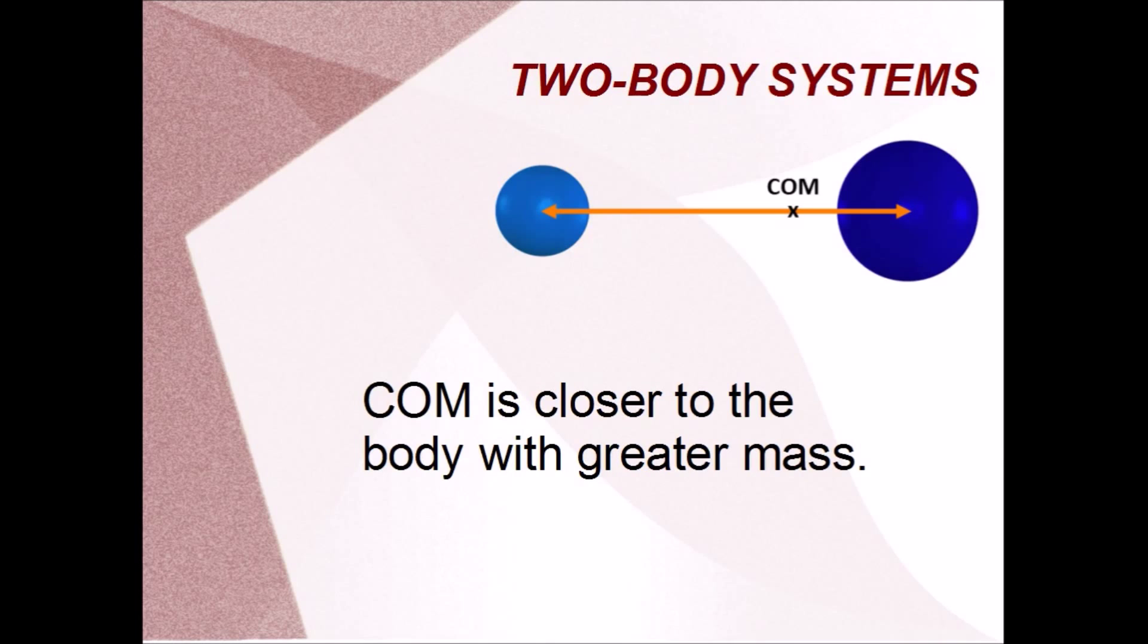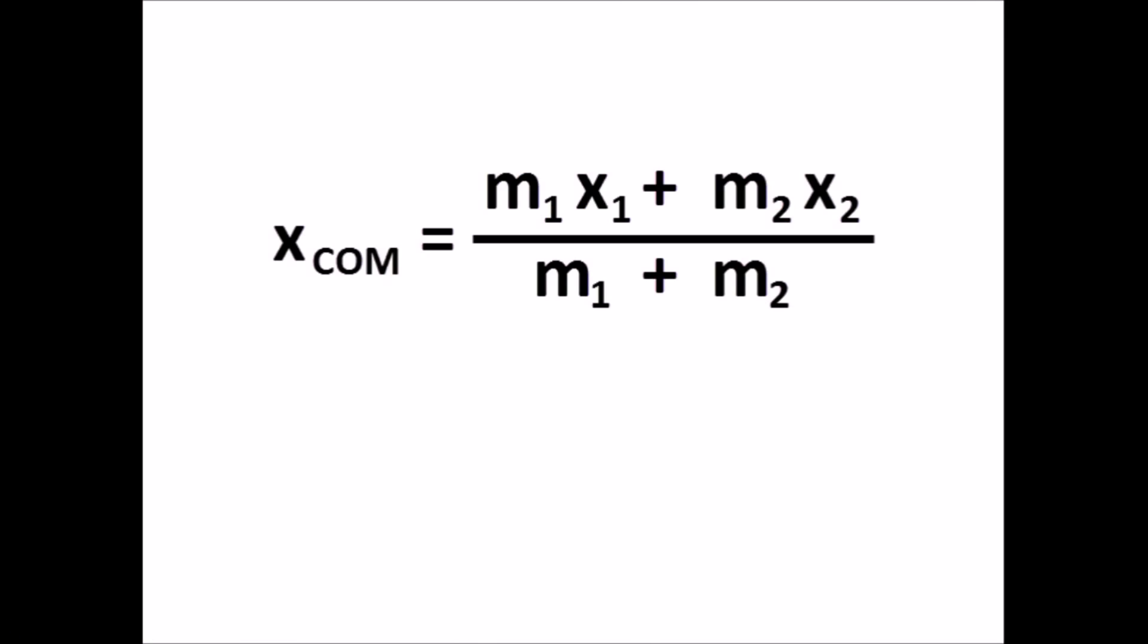If you don't like fractions, good news, there is a formula you can use. Now, don't be put off, this formula isn't as scary as it may look. What you do is choose one of the bodies in a two-body system. XCOM is the distance from that body out to the center of mass. M1 and M2 are the masses, and X2 is the distance between the two bodies.